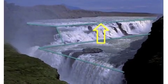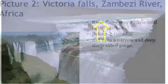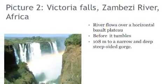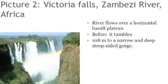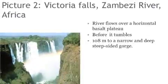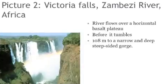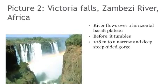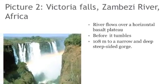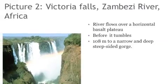Look at the picture carefully. Identify the fault line. Do you see the uplift of land due to faulting? Picture 2: Victoria Falls, Zambezi River, Africa. The river flows over a horizontal basalt plateau before it tumbles 108 meters to a narrow and deep steep-sided gorge.